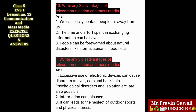Ten — write any three advantages of telecommunication and mass media. The answer is: one, we can easily contact people far away from us. Two, the time and effort spent in exchanging information can be saved. Three, people can be forewarned about natural disasters like storms, tsunami, floods, etc.